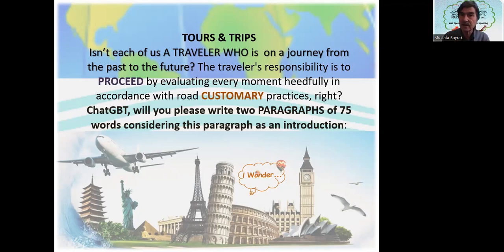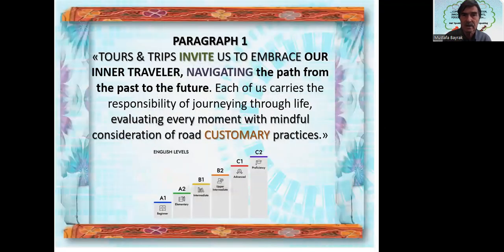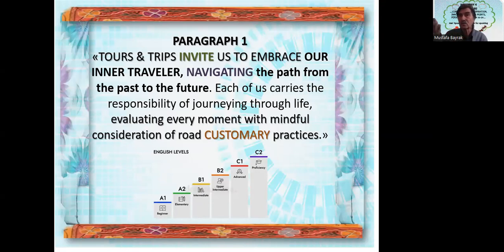ChatGPT, will you please write two paragraphs of 75 words, considering this as an introduction, the second as a development, and the third as the conclusion? Paragraph one — after the introduction — this is what ChatGPT said: 'Tours and trips invite us to embrace our inner traveler, navigating from the past to the future, from the beginning to the end. Each of us carries the responsibility of journeying through life, evaluating every moment with mindful consideration of road customary practices.'